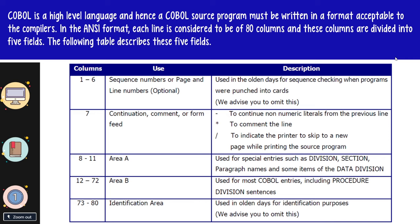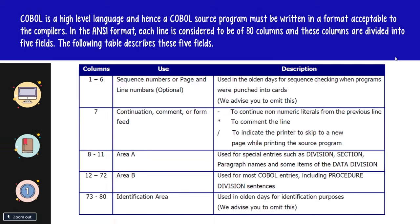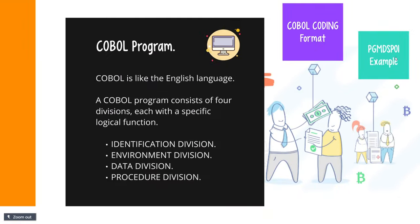Position 8 to 11 is known as Area A and is used for special entries such as data division sections. Position 12 to 72 is known as Area B and is primarily used to include various COBOL reserved words and sentences. Positions 73 to 80 were generally used in the old days and are no longer in use, though in certain projects they are used for tagging changes. Now let's move on to the next section where you'll get a clear idea of how exactly a COBOL program looks.